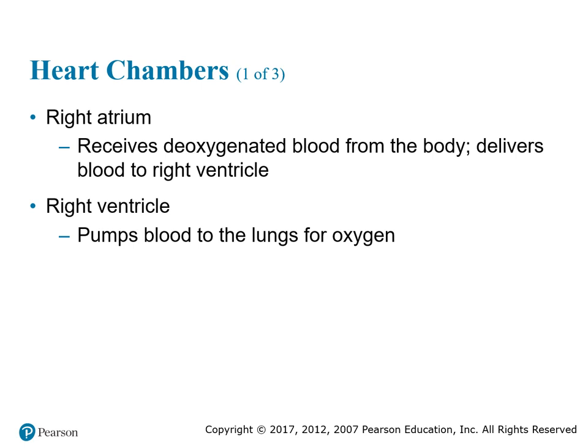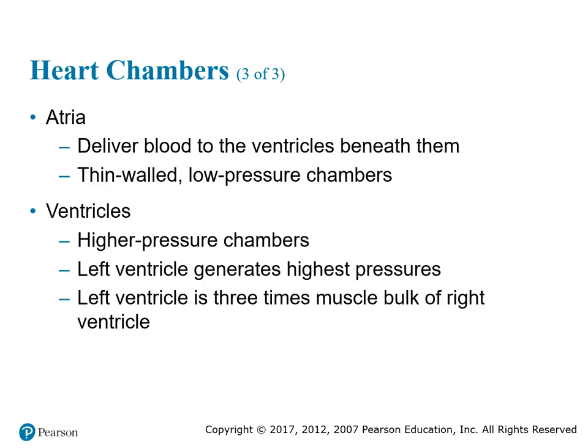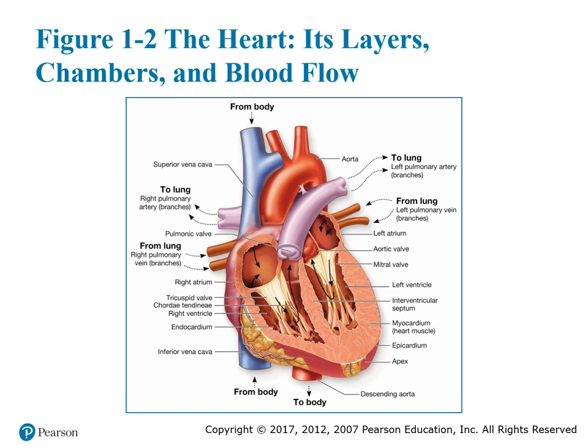The four heart chambers: the right atrium receives deoxygenated blood from the body and delivers it to the right ventricle. The right ventricle pumps blood to the lungs for oxygenation. The left atrium receives oxygenated blood from the lungs and delivers it to the left ventricle. The left ventricle pumps blood out to the entire body. The atria are thin-walled, low-pressure chambers, while the left ventricle generates the highest pressures and is three times the muscle bulk of the right ventricle.